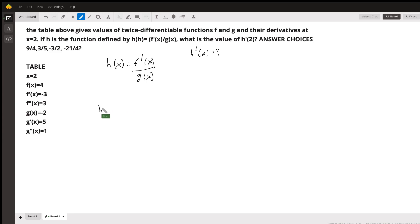So if we want to find h prime of x, we need to use the quotient rule again. And so let's be able to low, so the denominator, g of x, times d high, so the derivative of the numerator, so times the derivative of f prime of x, which is f double prime of x,